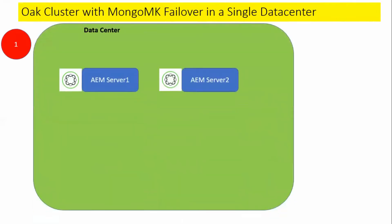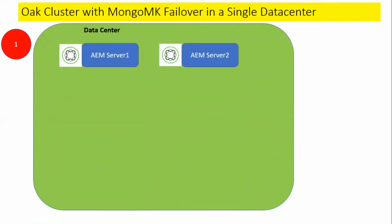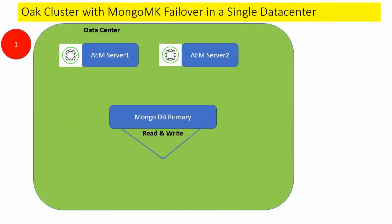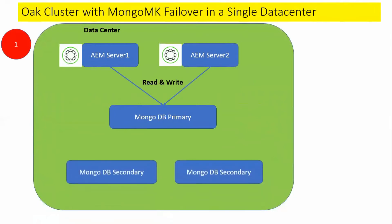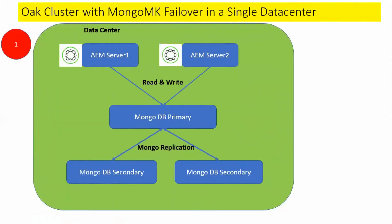As we see in this picture, we have multiple AEM server instances running on a data center. There is a MongoDB primary, and all the read and write happens directly to the primary MongoDB instance. We also have a second layer of MongoDB instances, and all the replication from primary happens to the MongoDB secondary instance.